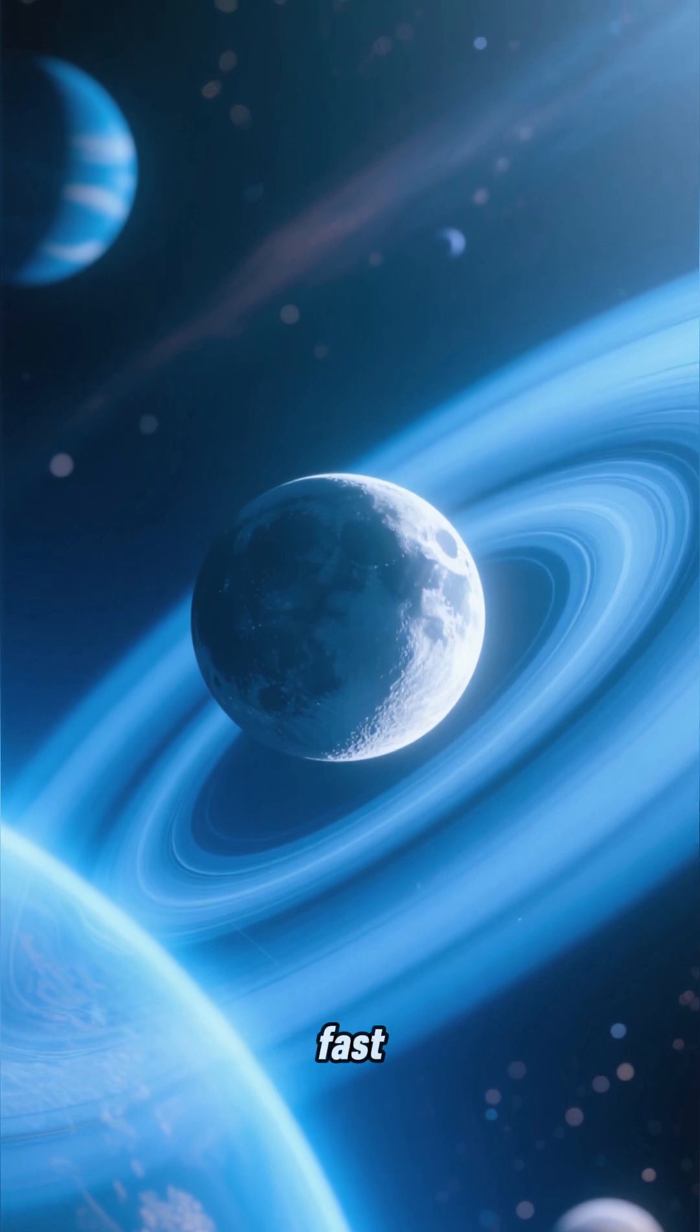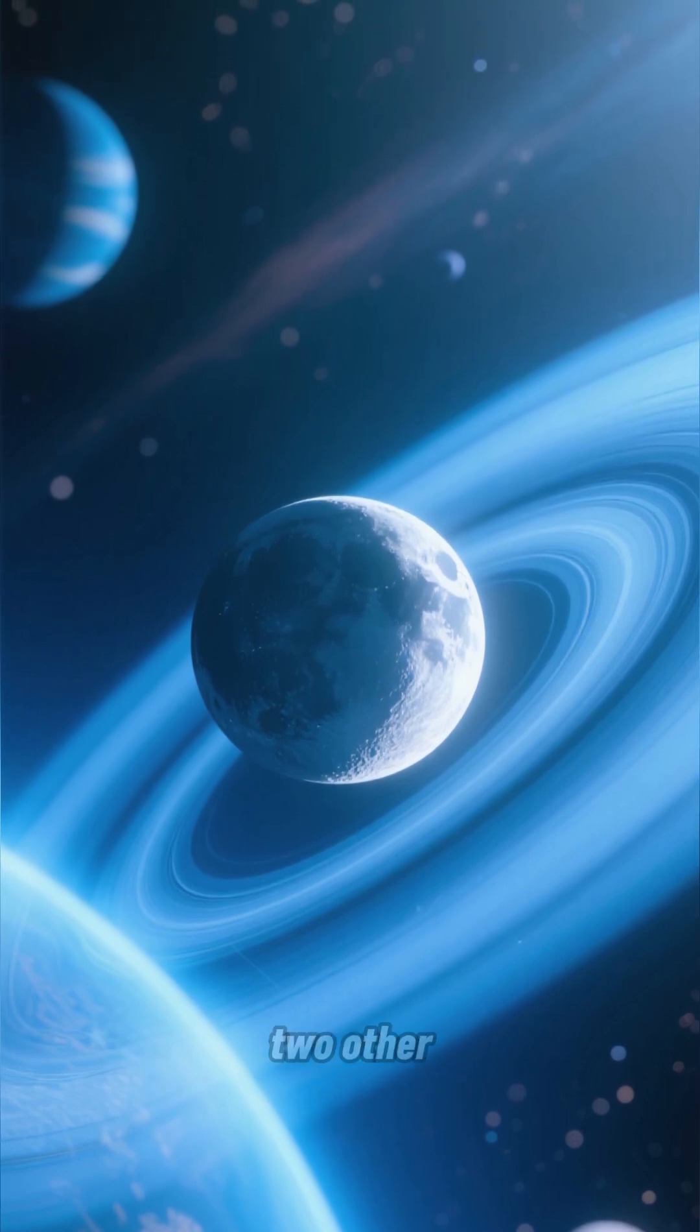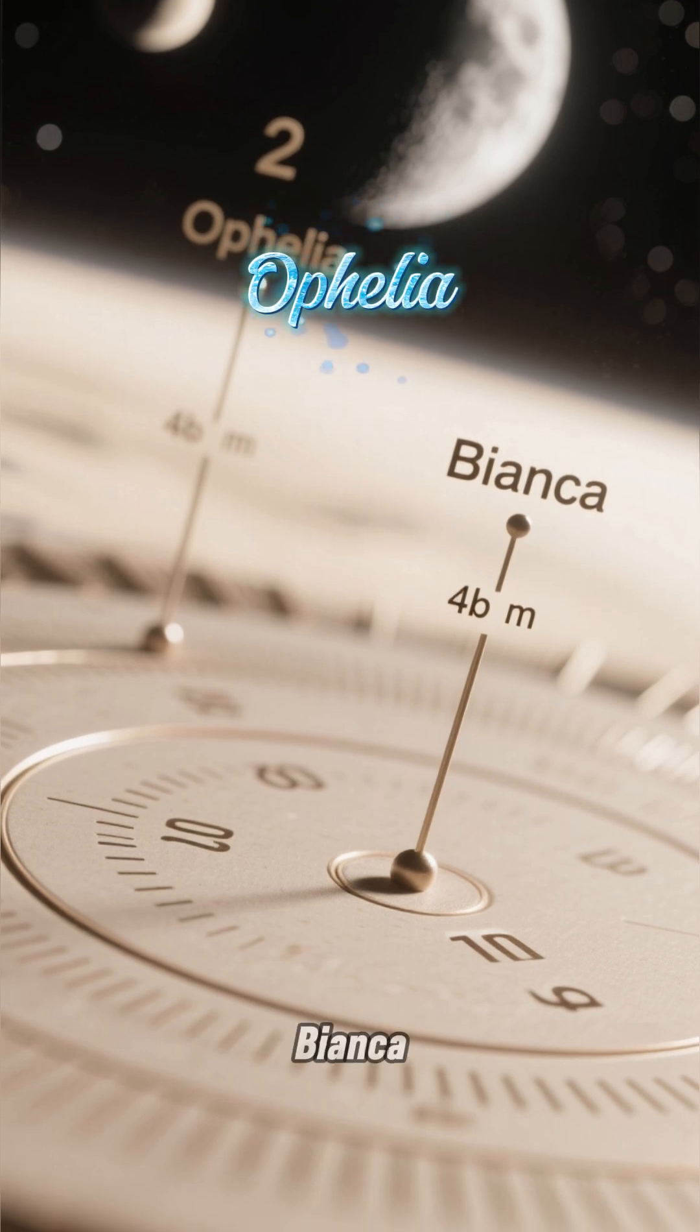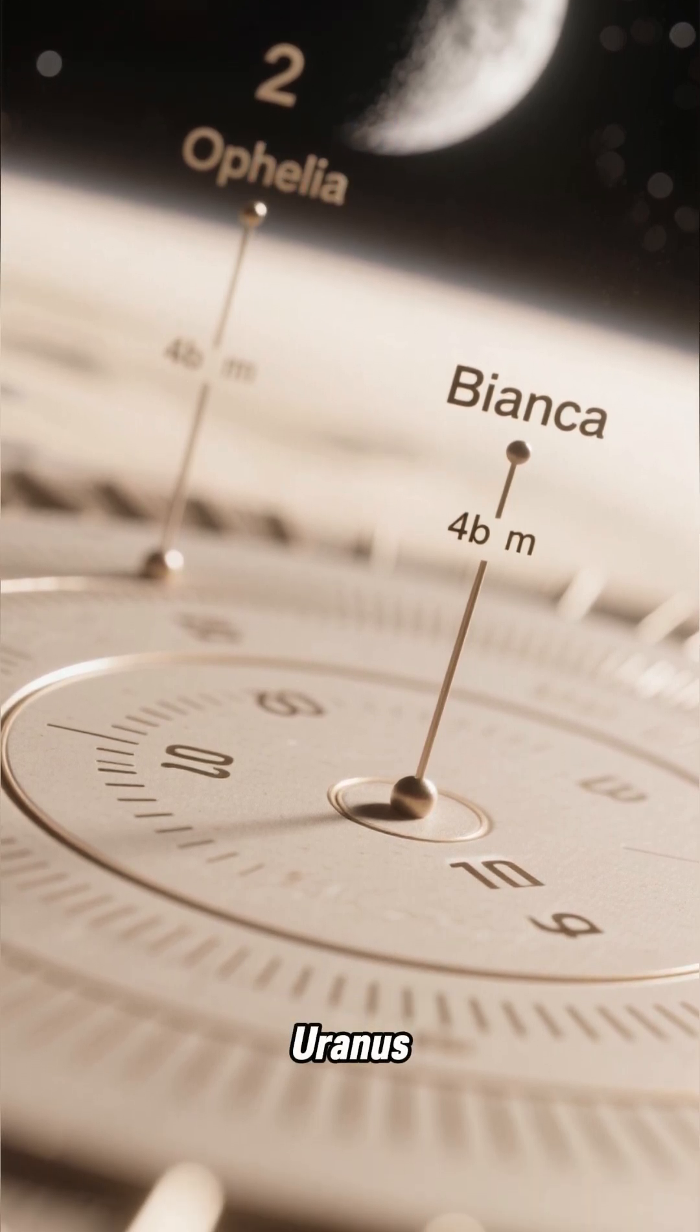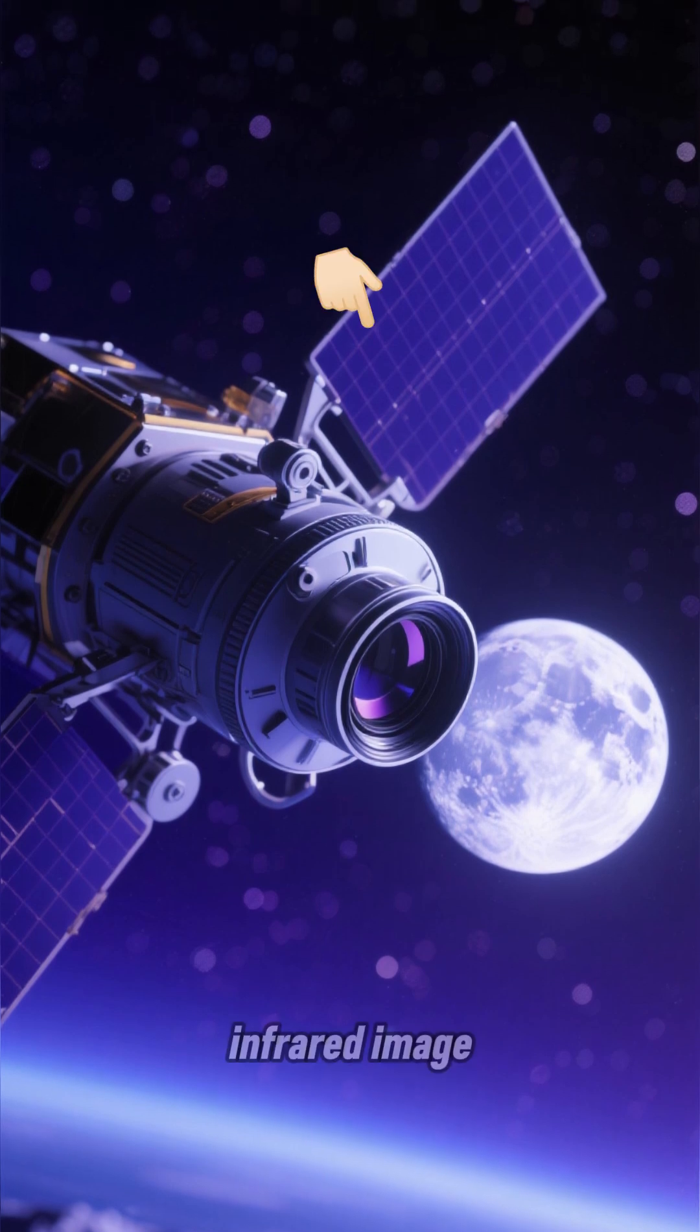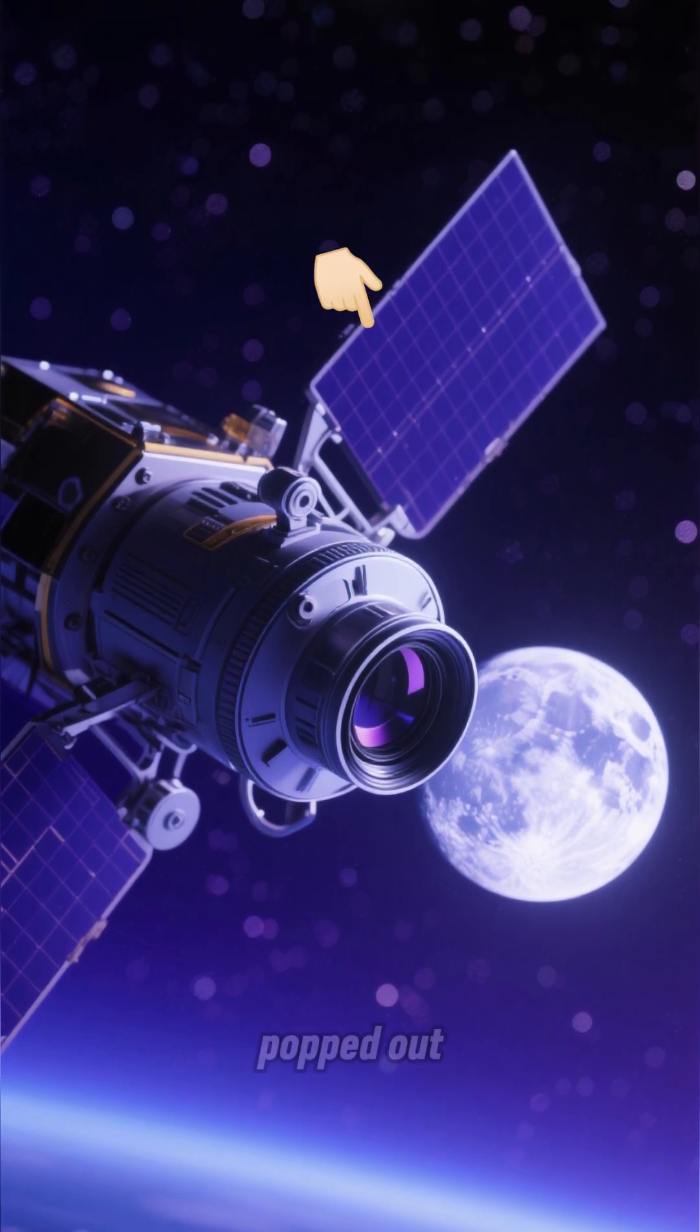It orbits Uranus in just 9.6 hours. That's insanely fast. It circles the planet in between two other moons, Ophelia and Bianca, about 35,000 miles from the center of Uranus.